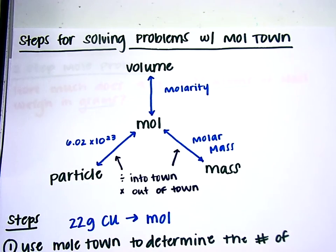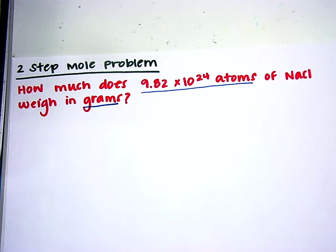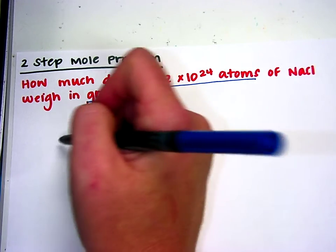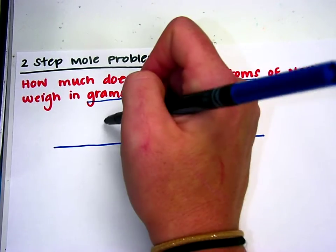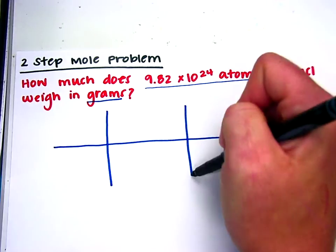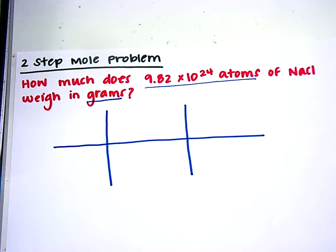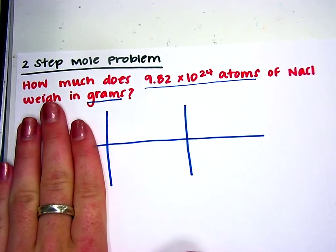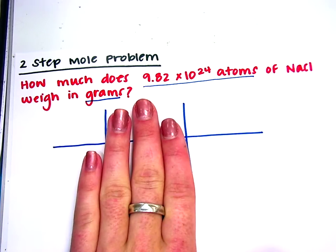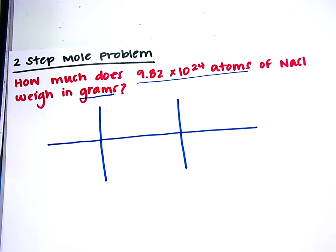This is a two-step mole problem. When I set this problem up in my chart, I can go ahead and set up two spots, because if I don't use both of them, I did something wrong. The first area is your given, then you'll convert from particles to moles, and then moles to mass in this last part.